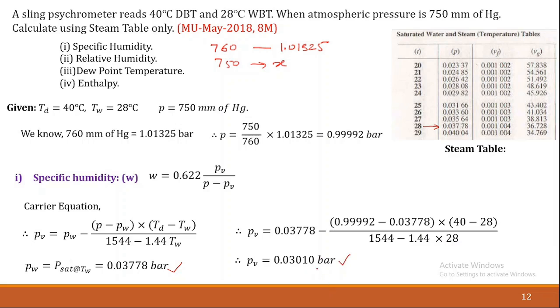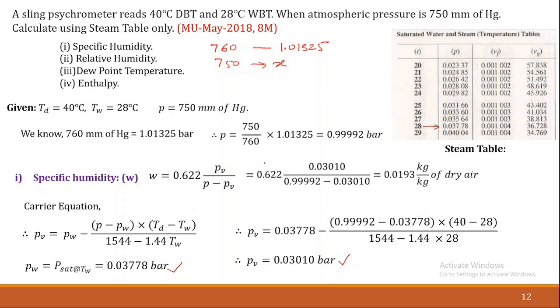Putting this value of PV into the specific humidity relation, we get specific humidity = 0.0193 kg per kg of dry air.